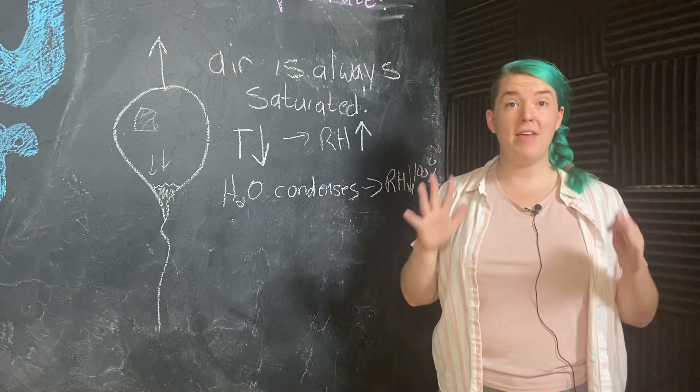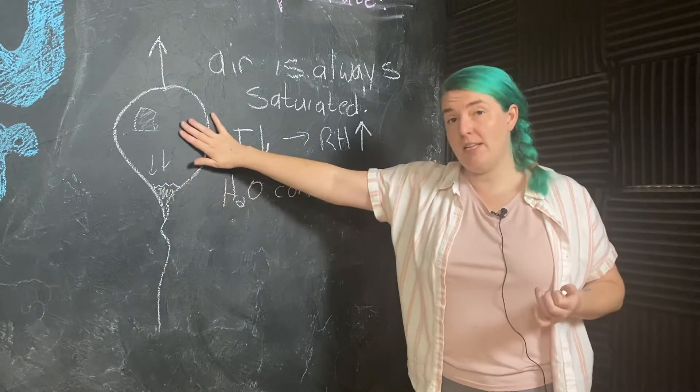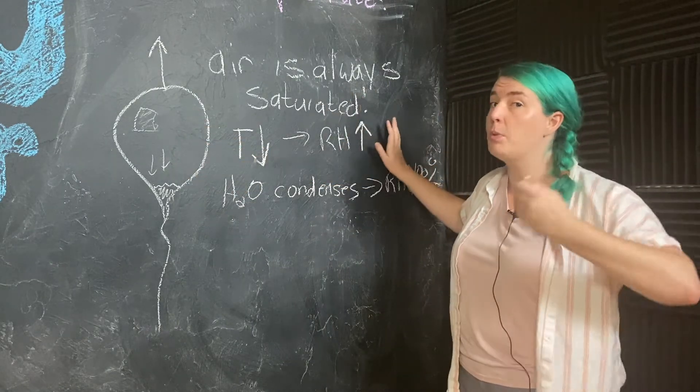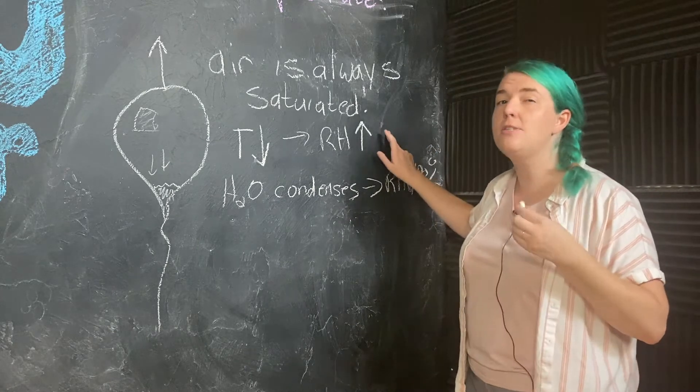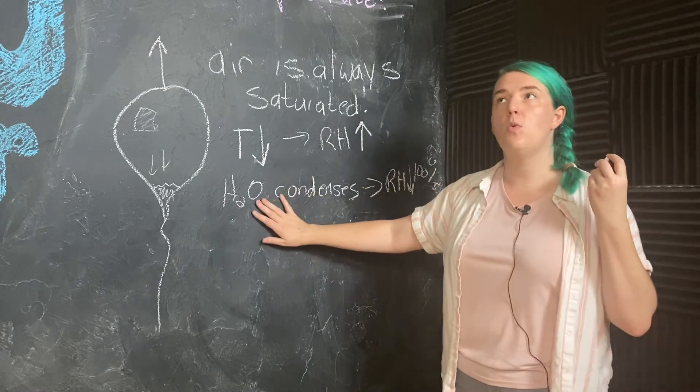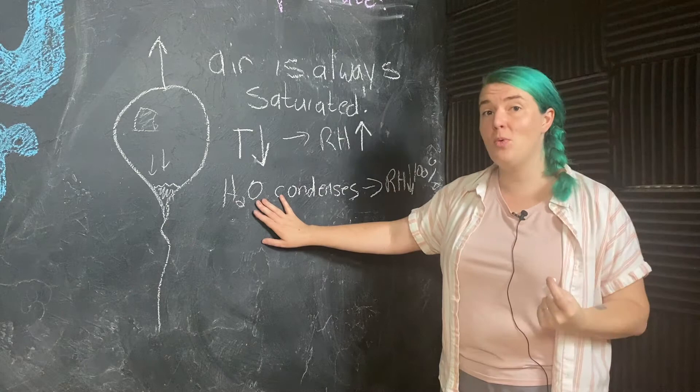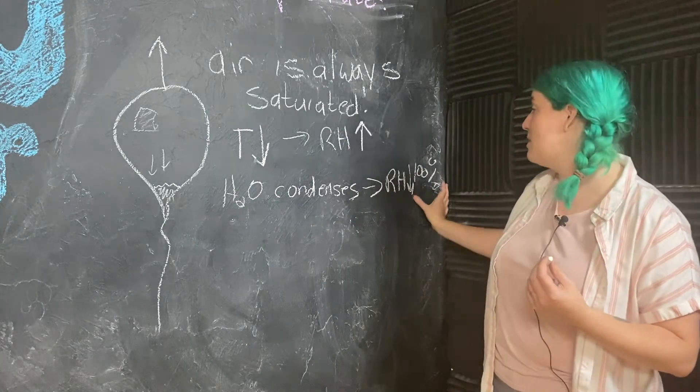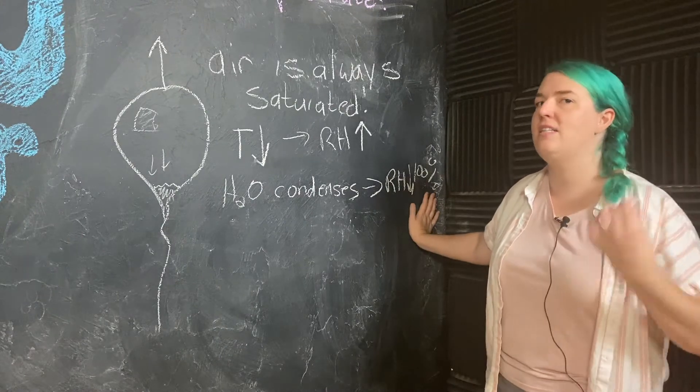So to sum all of that up, as the balloon rises, temperature drops, causing us to be supersaturated. The system then condenses water vapor into a liquid which releases latent heat and brings us back to exactly saturation.